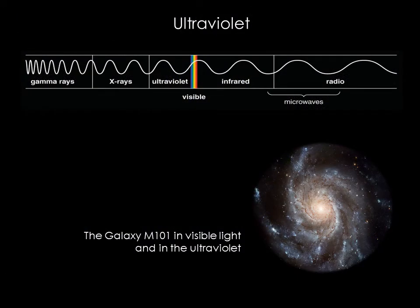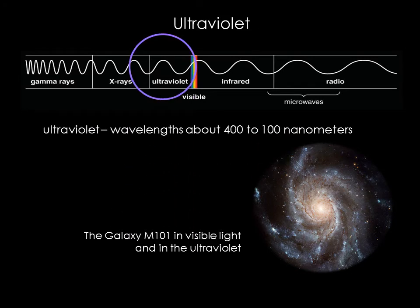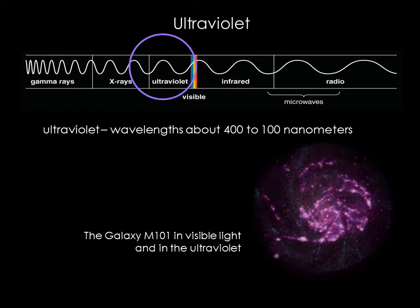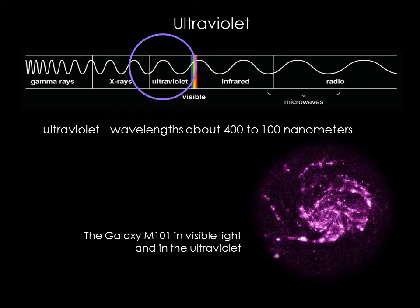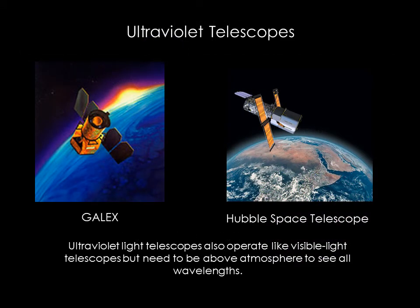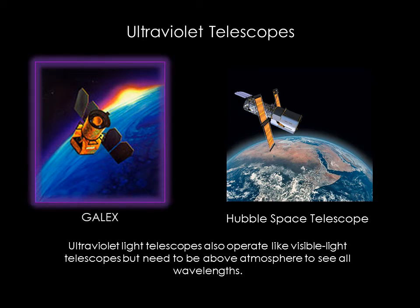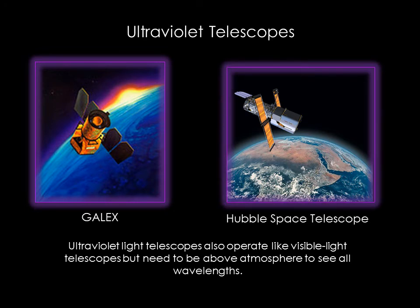On the other side of the spectrum is light with wavelengths somewhat shorter than those of visible purple. This light is called ultraviolet because it lies beyond the violet end of the rainbow. Like infrared, ultraviolet light is similar to visible, so the telescopes used are similar too. Also like infrared, most ultraviolet light doesn't reach the ground, so ultraviolet telescopes are put into space. The Galaxy Evolution Explorer, or GALEX, is conducting an ultraviolet survey of the entire sky. The Hubble Space Telescope is also capable of high resolution imaging and spectroscopy in the ultraviolet.